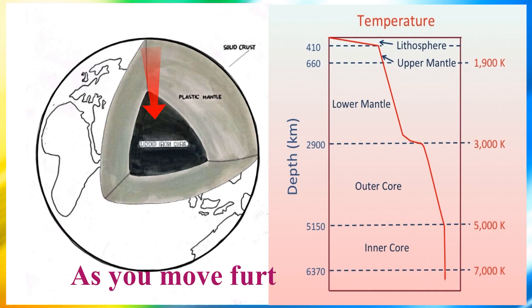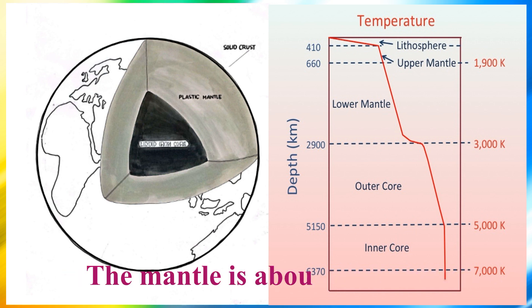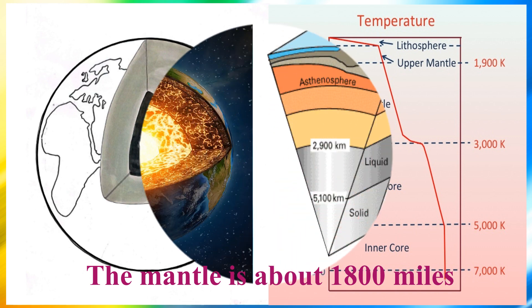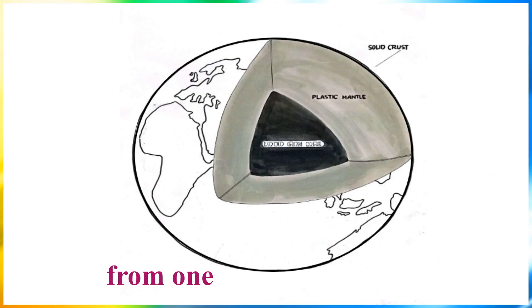As you move further down to the center of the earth, the temperature increased to 135 degrees Fahrenheit. The mantle is about 1,800 miles, while the core is about 3,000 miles from one edge to the center.